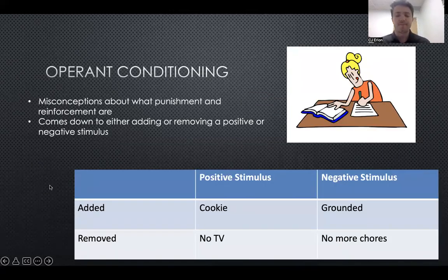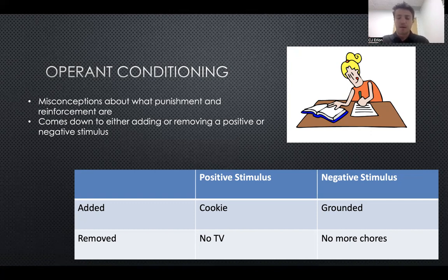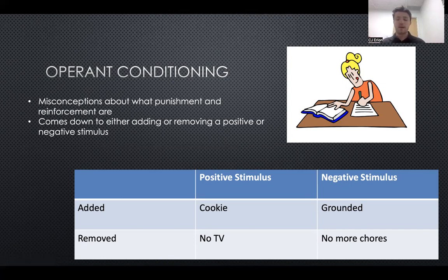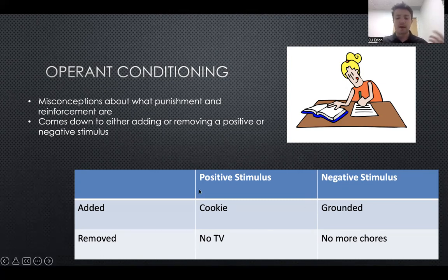There are common misconceptions about what reinforcement really is and the difference between punishment and reinforcement. It all comes down to either adding or removing a positive or negative stimulus. For example, if we're trying to motivate a child to do their homework, we could add a positive stimulus to increase the behavior when the homework is done. Additionally, we could remove a negative stimulus — like no more chores — which is also rewarding and should strengthen that bond and increase homework completion.